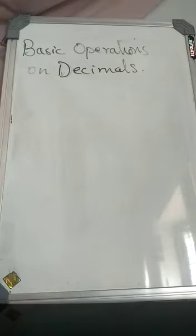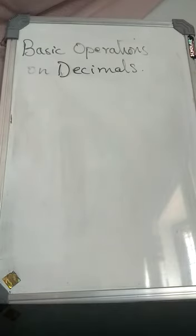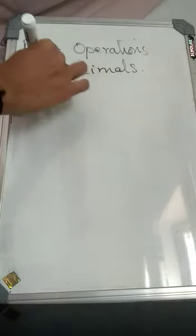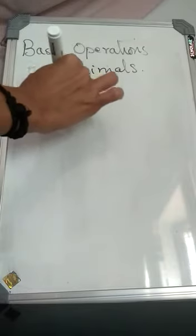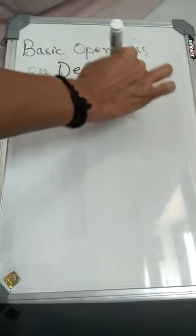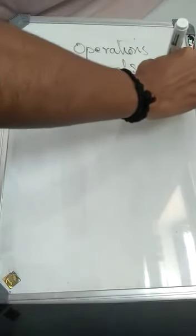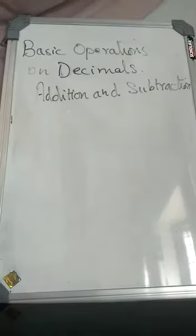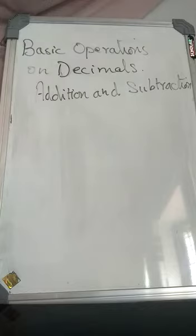Hello children, this is your maths class and we are going to start the next chapter: basic operations on decimals. So first we are going to learn addition and subtraction of decimals. We have learned decimal numbers last chapter, and now we are going to learn basic operations — addition, subtraction, division, multiplication. The first one we are going to learn is addition.